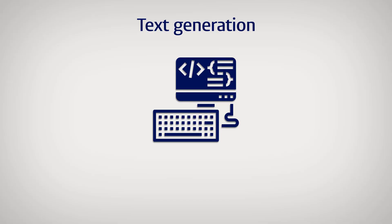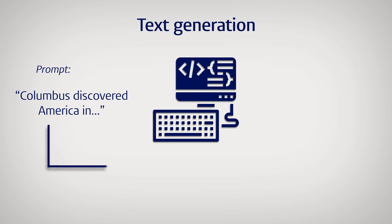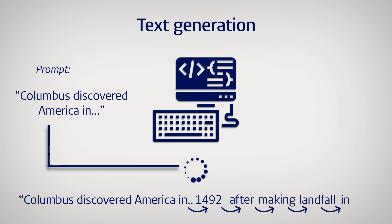And these generated texts can look pretty good. If you prompt the LLM with the little snippet that says Columbus discovered America in... Then based on all the texts it has seen, it will predict that the next word is 1492. And so it will finish the text in a way that gives the impression that it knows about history.